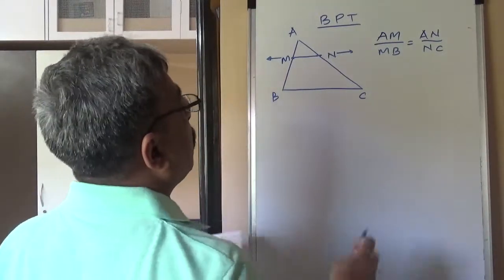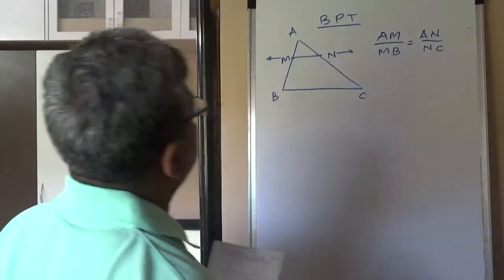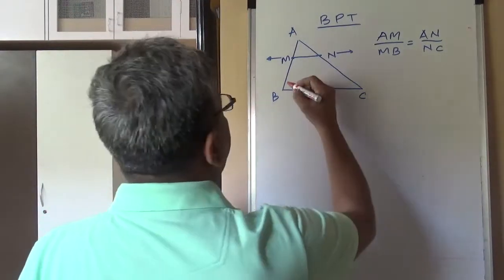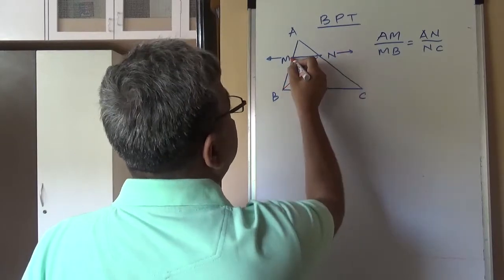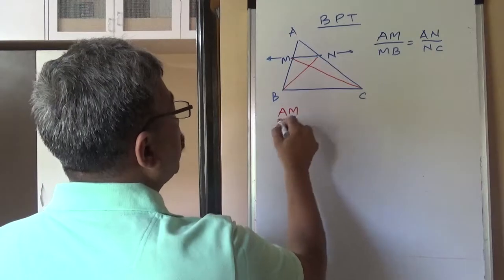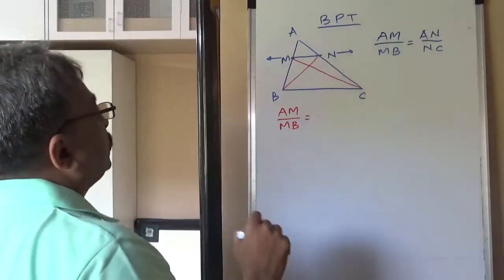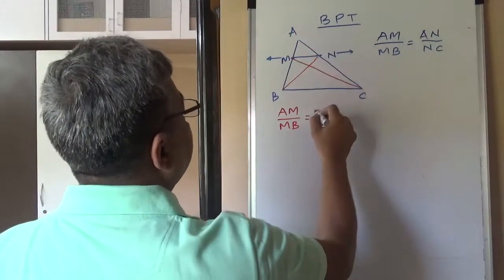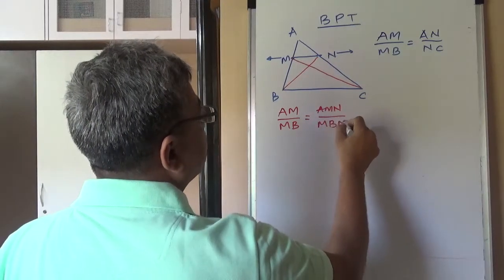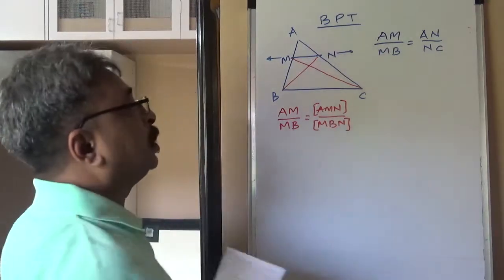Here is the proof. Basically, collinear bases and common vertex is the theme. That is what we learned last lecture. So, we join BN and CN. And we know if I want to write ratio AM upon MB, I can write it in terms of the area of triangle AMN upon MBN, area of AMN and area of MBN.